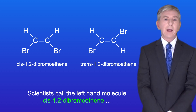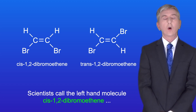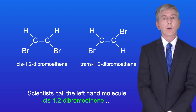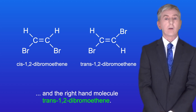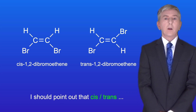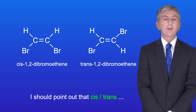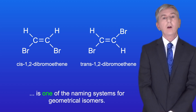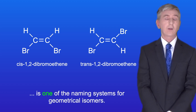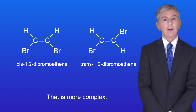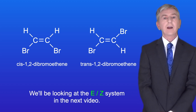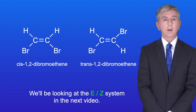Scientists call the left-hand molecule cis-1,2-dibromoethene and the right-hand molecule trans-1,2-dibromoethene. Cis-trans is one of the naming systems for geometrical isomers. The other naming system is called EZ, which is more complex, and we'll be looking at the EZ system in the next video.